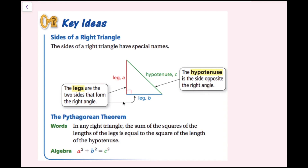In any right triangle, the sum of the squares of the lengths of the legs is equal to the square of the length of the hypotenuse. The equation is A squared plus B squared equals C squared. If I square this leg and then I square this leg and add them up, it equals this side length squared as well.